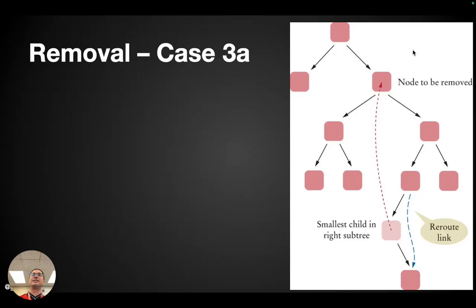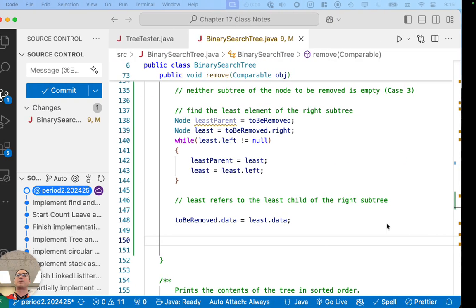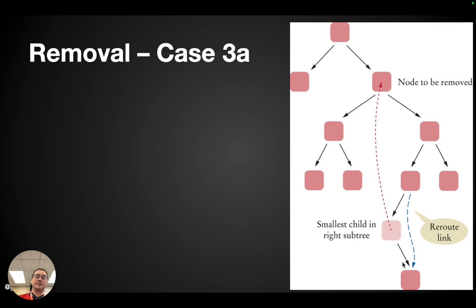Now we're not quite done. The data is up where we want it, but this 'least' node is still there. So we still have to clean up — we have to update the least node's parent to refer to the least node's right child. We still have to do this link that actually removes the node with the duplicated data from our tree. There are two potential cases: the parent of the least node could actually be the node to be removed, or we could be down in the subtree.